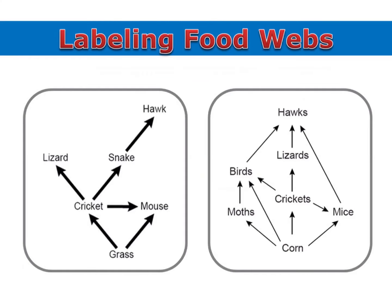Labeling food webs is done in the same way; we just have more to label. So in this first food web, I'll start by putting a P next to my grass. And then everything that eats the grass is a primary consumer. And then since crickets are a primary consumer, everything that eats the crickets is a secondary consumer.